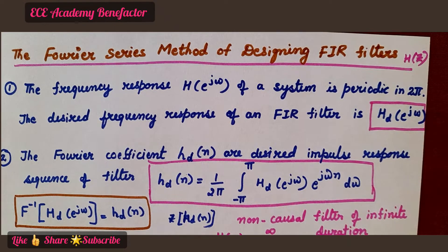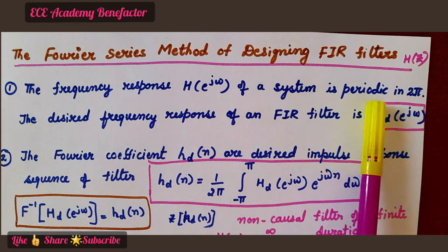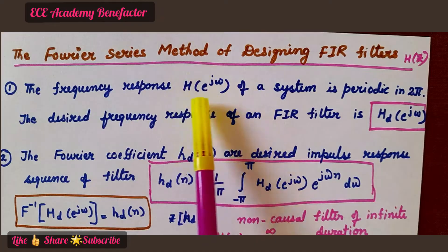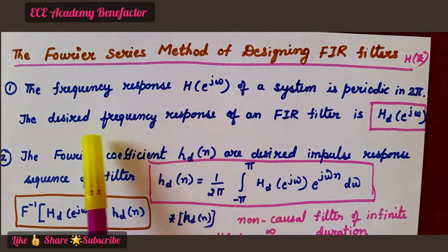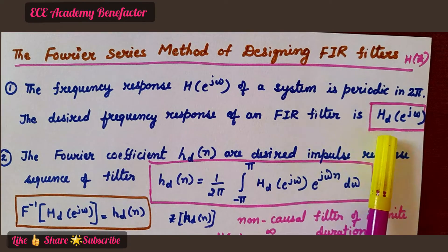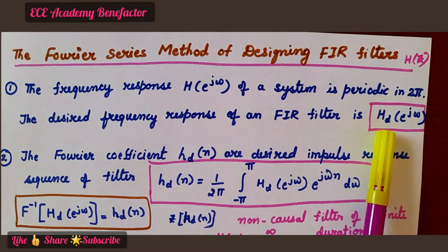The first step: the frequency response H of e to the power j omega of a system is periodic in 2 pi. So this frequency response H of e to the power j omega is periodic for a period of 2 pi. What will be given in the question? The desired frequency response of an FIR filter is given as H_d of e to the power j omega — this is known as the desired frequency response of the FIR filter.